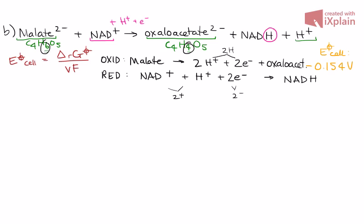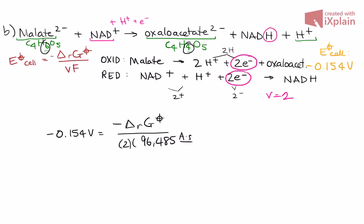Here we have our two half reactions. Again, we can find V by recognizing that two electrons are involved in this reaction. So V is equal to 2. Like last time, we're just going to plug it all into the formula. V of the cell is negative 0.154 volts equals negative delta G over V, which is 2, and Faraday's constant.